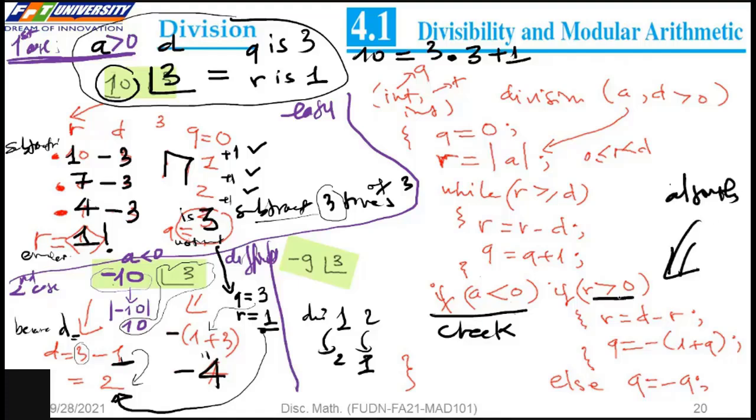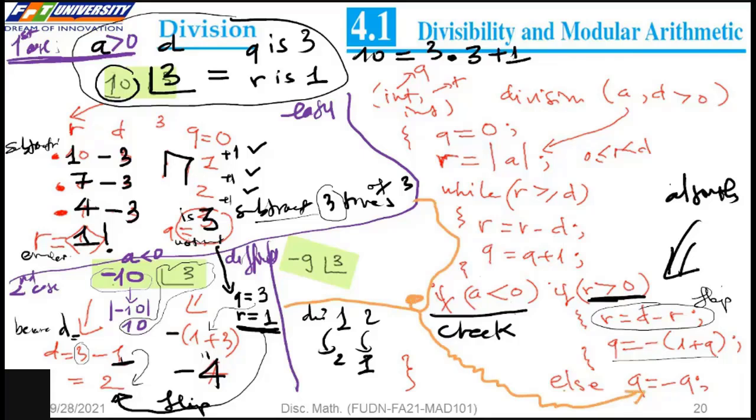This is the algorithm. In this case, we have the absolute value 9 divided by 3. We have q is 3 and the remainder is 0. a is negative, so in here, the remainder is zero. We flip the quotient to negative. So q is negative 3. By here, we have negative 9 equals 3 times negative 3. That is the division algorithm.